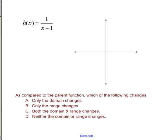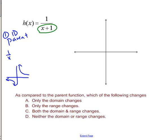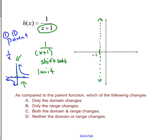We're going to take these transformations and apply them to our parent function. First job is to identify your parent function — in this case it's 1 over x, which has asymptotes and looks like boomerangs. Now, am I adding inside or outside? I'm adding inside that parent, inside 1 over x. This is an inside transformation, so since I'm adding, I shift left 1 unit. What shifts on this graph is the asymptotes — my vertical asymptote, normally on the y-axis, shifts 1 unit to the left. The horizontal asymptote doesn't change at all, and then my graph just shifts over 1.